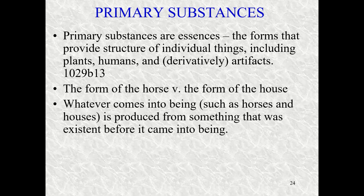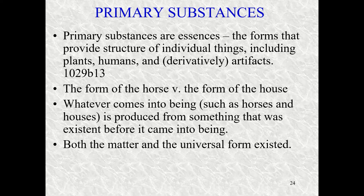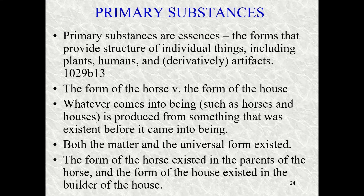There is no form that continues to maintain the structure when we're talking about artifacts. Whatever comes into being — horses, houses — these are produced from something that was existent before they came into being, as we saw in the Physics. We have both the matter and the universal form existing prior to the individual thing. The form of the horse existed in the parents, and the form of the house existed in the mind of the architect and the builder.